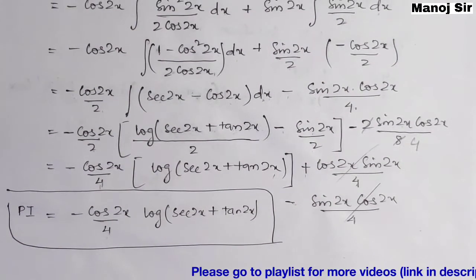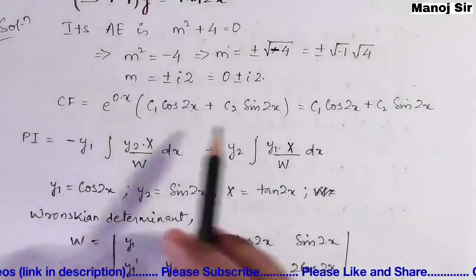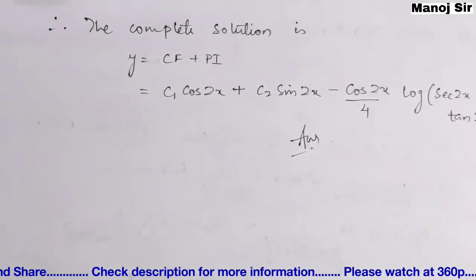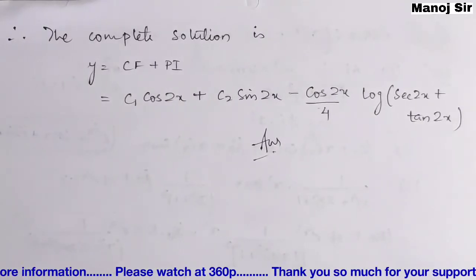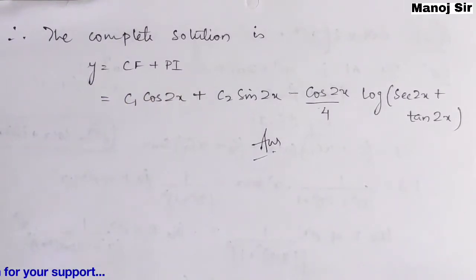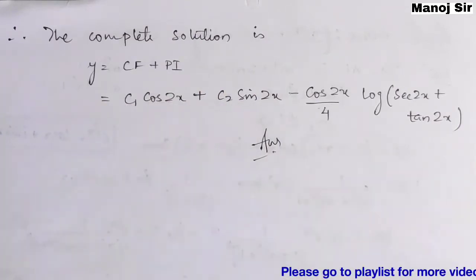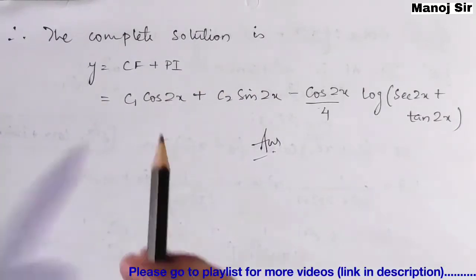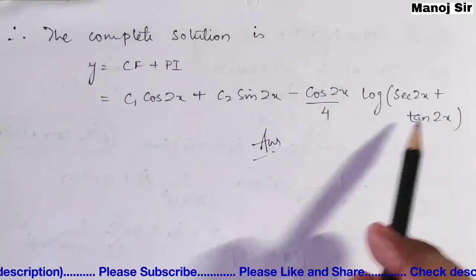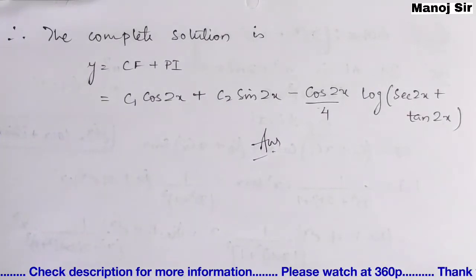The complete solution is y = CF + PI. So the final answer is: y = c1·cos2x + c2·sin2x − (cos2x/4)·log|sec2x + tan2x|. This is the complete solution of the given problem.